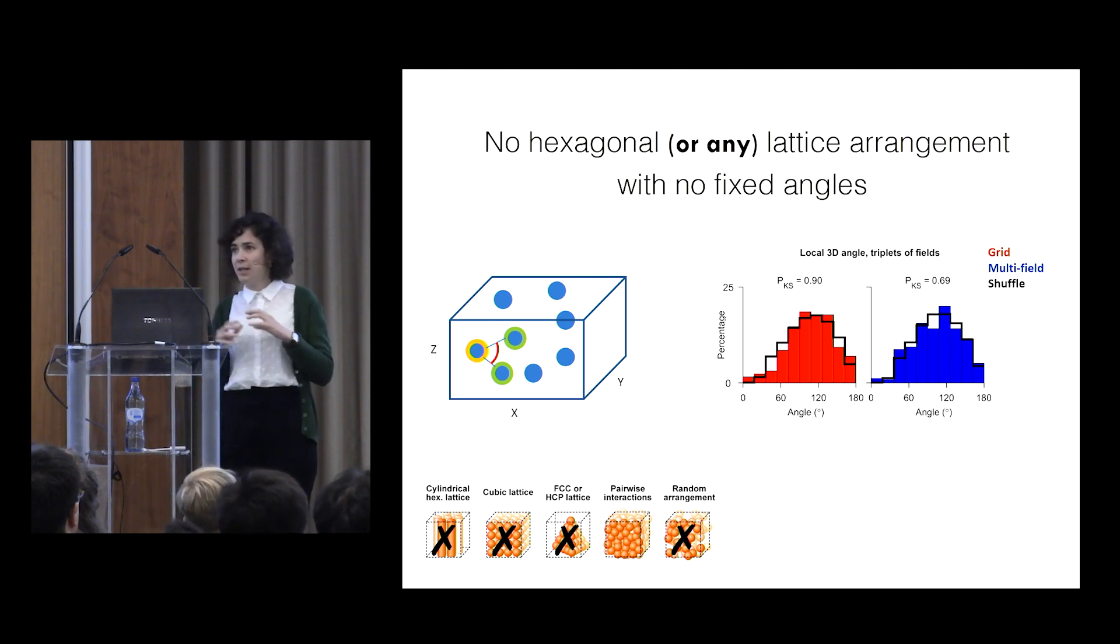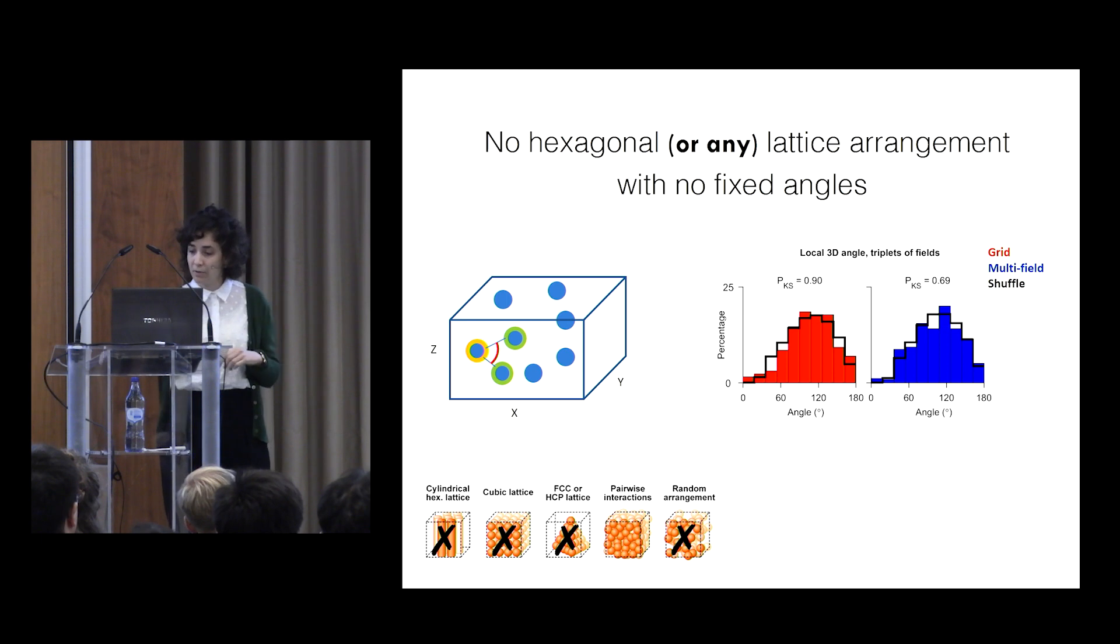So you can now ask, how can it be that we have narrowly distributed distances, but no global order emerging? And the answer is because what I just showed you, we have no fixed angles.